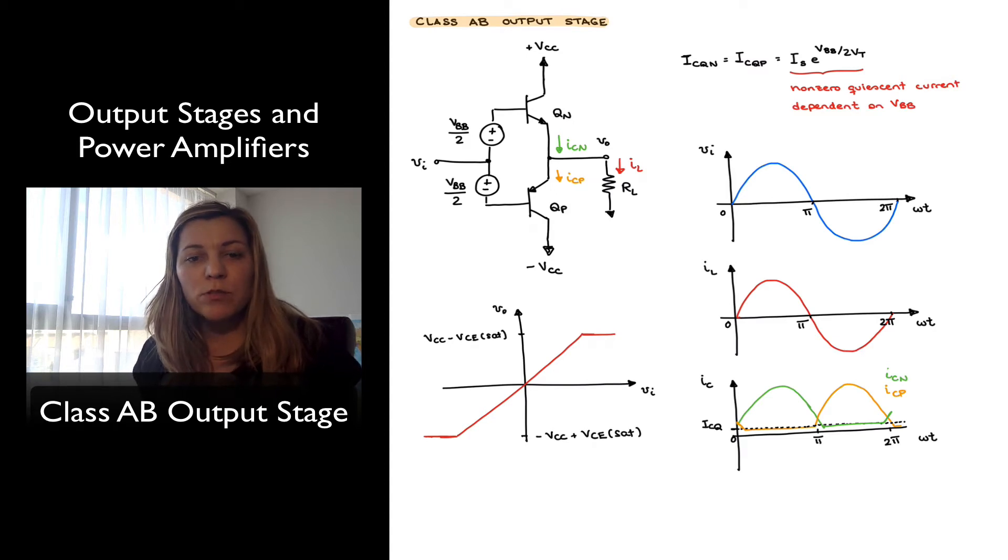A compromise between the two in terms of performance can be achieved via the Class AB output stage. And what we're doing in the Class AB output stage is essentially adding a small quiescent current to our transistors. I've represented it there,